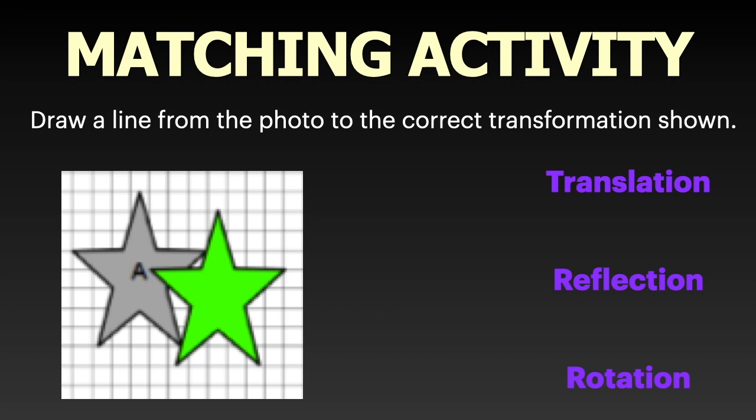Based on the photo, what transformation is shown — translation, slide, reflection, flip, or rotation, turn? What did they do to get from figure A to the colored photo? If you said translation, you are correct — they slid it. Good job!